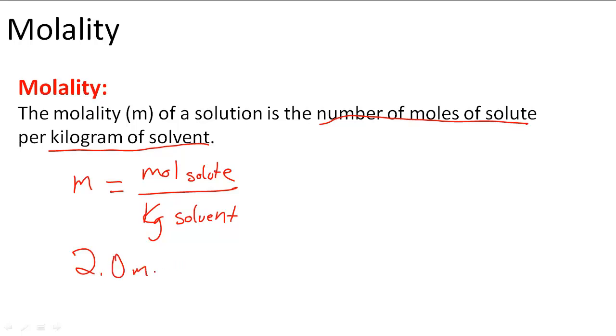for example, if we write 2.0 m, we usually write that as 2.0 molals or 2.0 moles per kilogram. This all means the same thing and describes the relationship between the number of moles of a solute